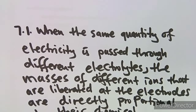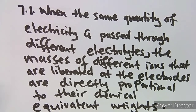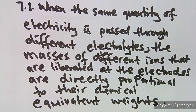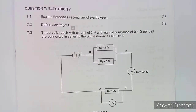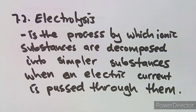For question 7.1, Faraday's Second Law states: when the same quantity of electricity is passed through different electrolytes, the masses of different ions liberated at the electrodes are directly proportional to their chemical equivalent weights. For 7.2, electrolysis is the process by which ionic substances are decomposed into simpler substances when an electric current is passed through them.